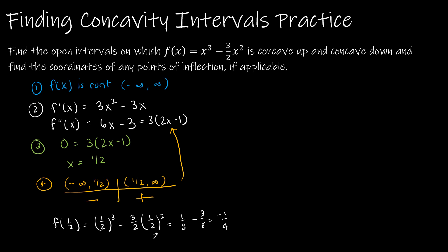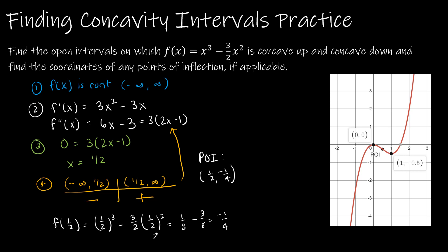There is a point of inflection because we changed from negative to positive, so the point of inflection is at (one half, negative one fourth). We already graphed this function when we found the intervals of increase and decrease. Notice right at one half comma negative one fourth, the function changes from concave down to concave up.